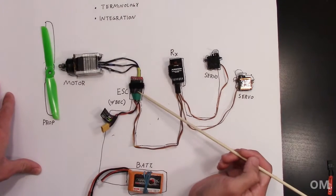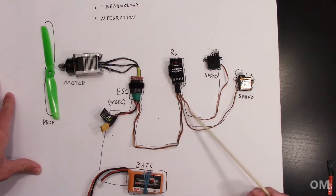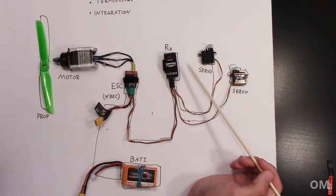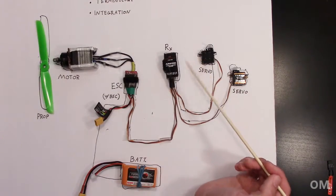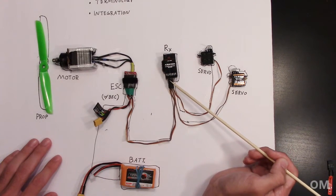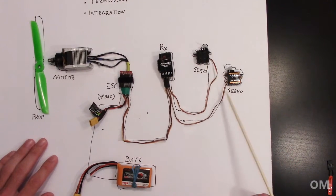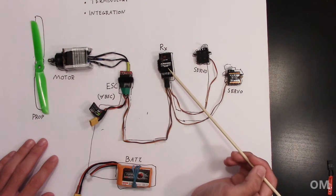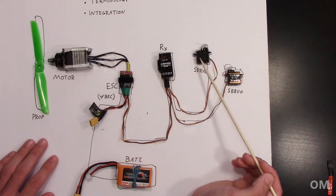And then coming off of the ESC here, we have our receiver. And this is the guy that talks to our transmitter, which we're going to talk about in a second. So this is our receiver. And then coming off of the receiver, we have servos. Here I just have two servos to show you, but depending on what kind of receiver you have, you could have any number of servos.